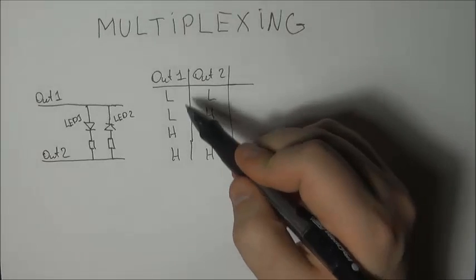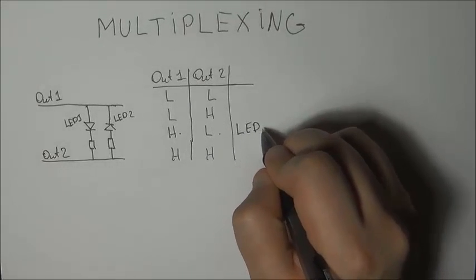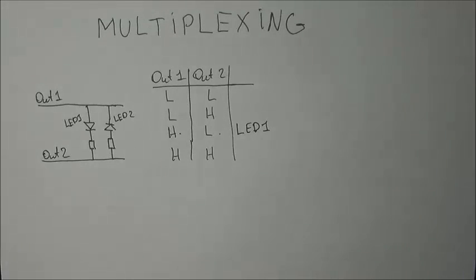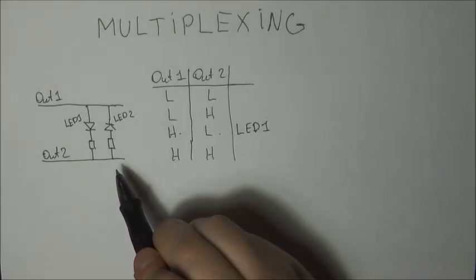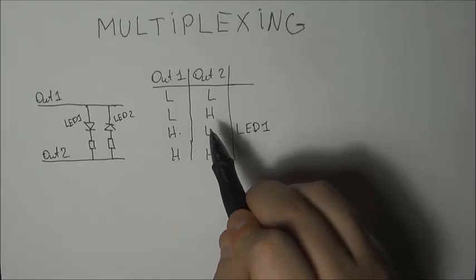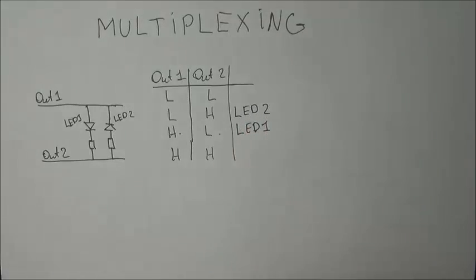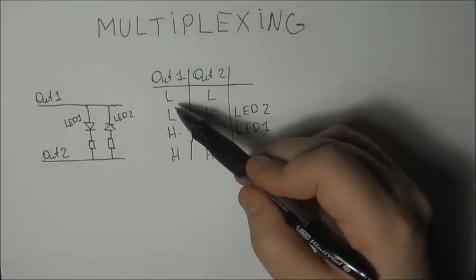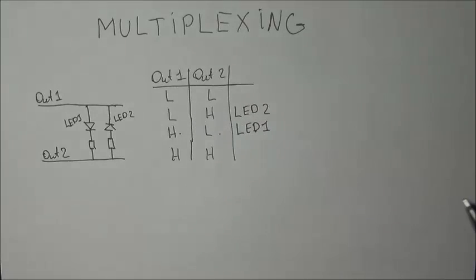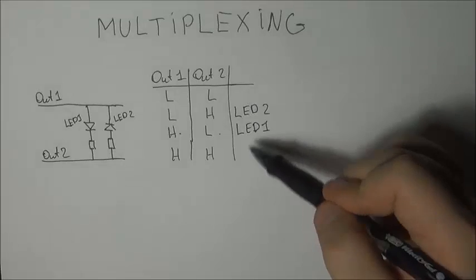If output 1 is high and output 2 is low, LED 1 will turn on. If on the other hand output 2 is high and output 1 is low, LED 2 will turn on. In the case of low low...